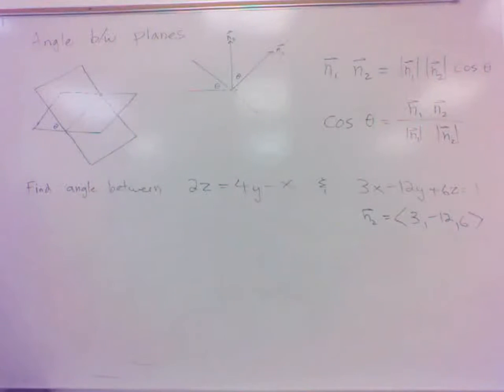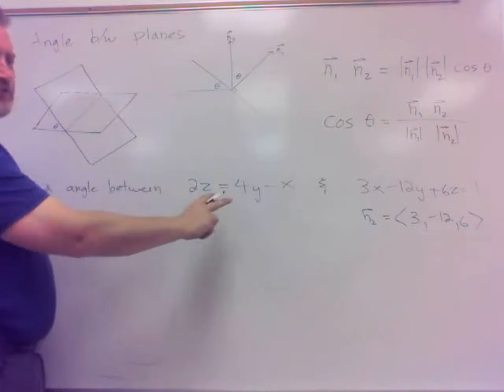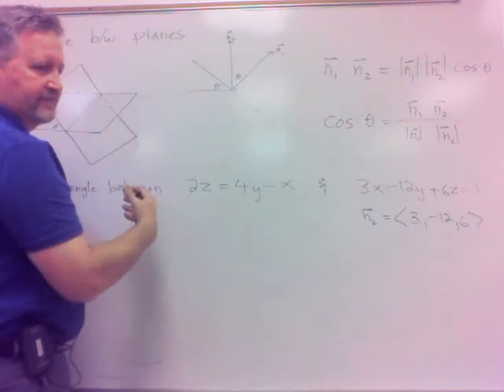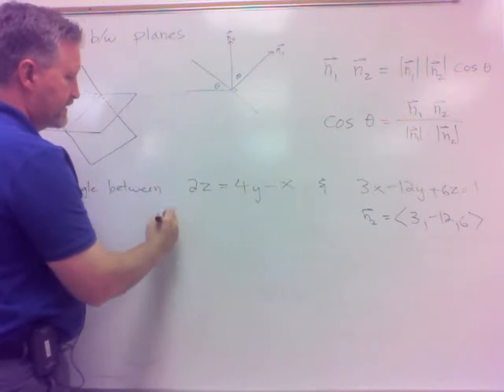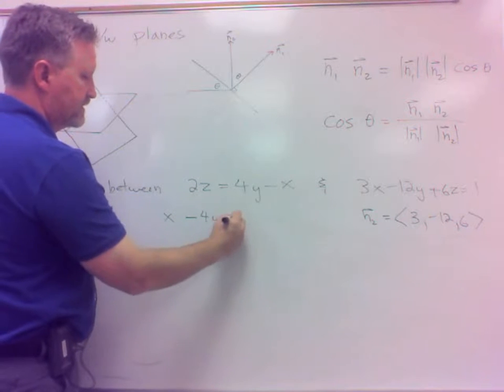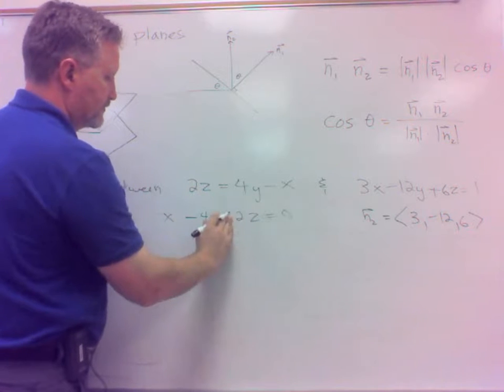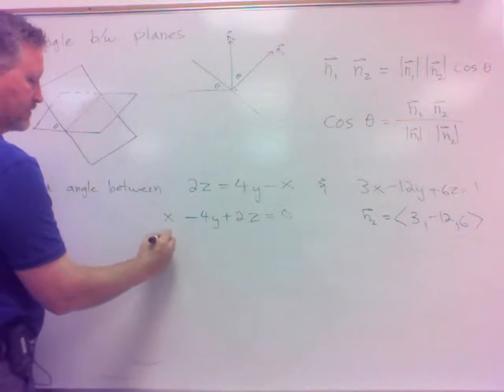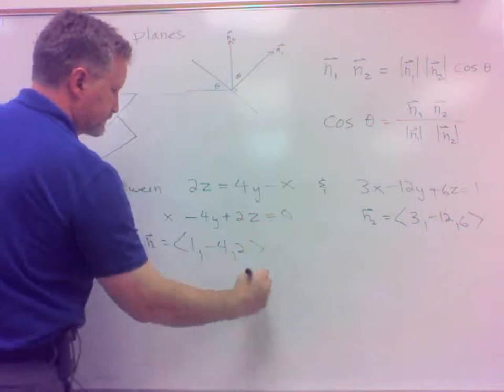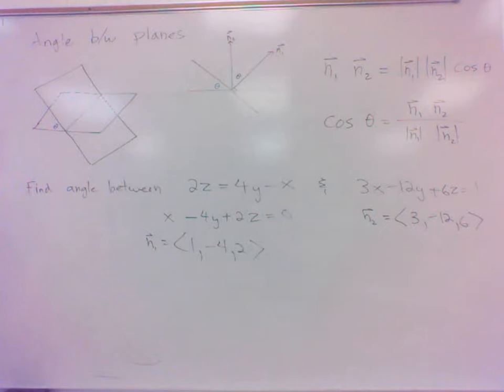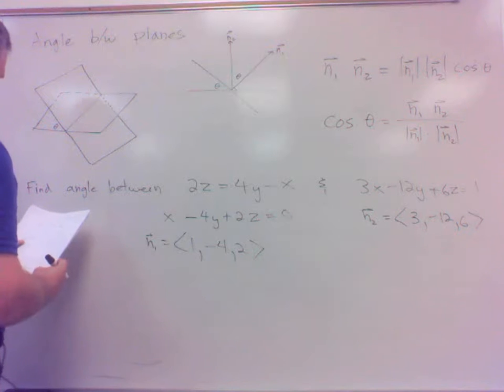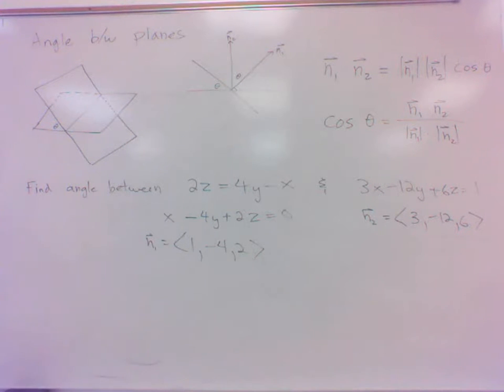However, to do the normal vector over here, we need it more in standard form, so we need the x's and the y's and z's on the same side. So let's just add the x, subtract the 4y, and we've got our normal vector here would be 1, negative 4, and 2. These are parallel, these are parallel. Didn't mean for them to be parallel.